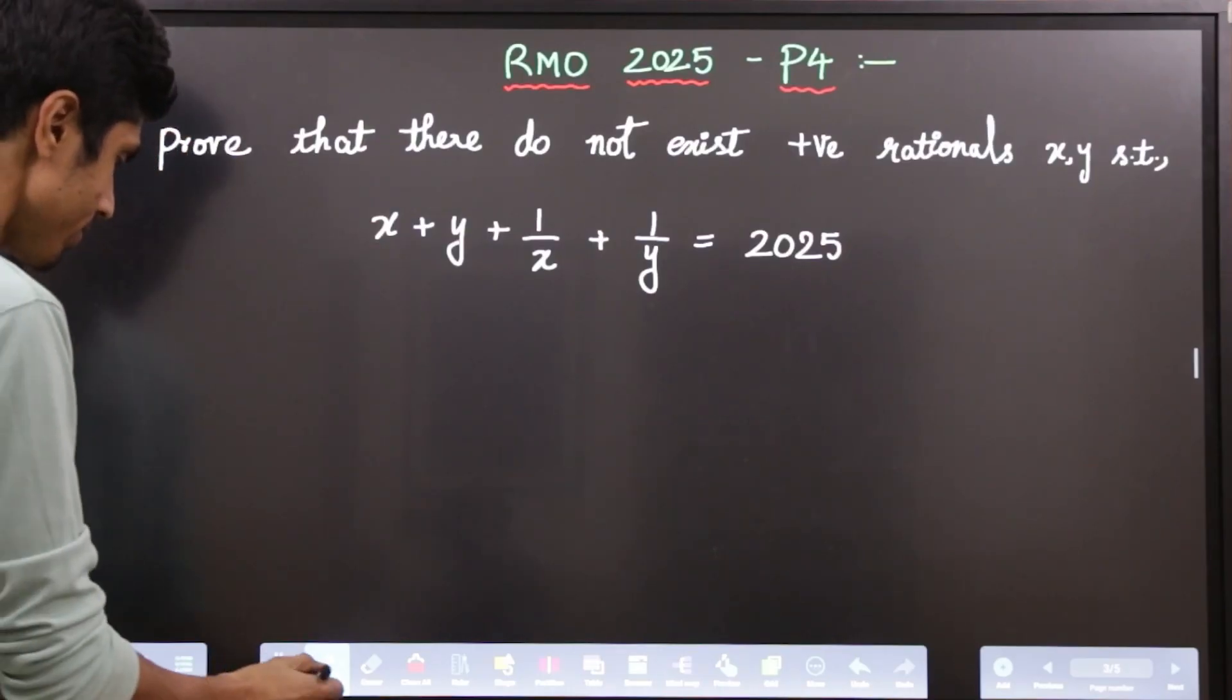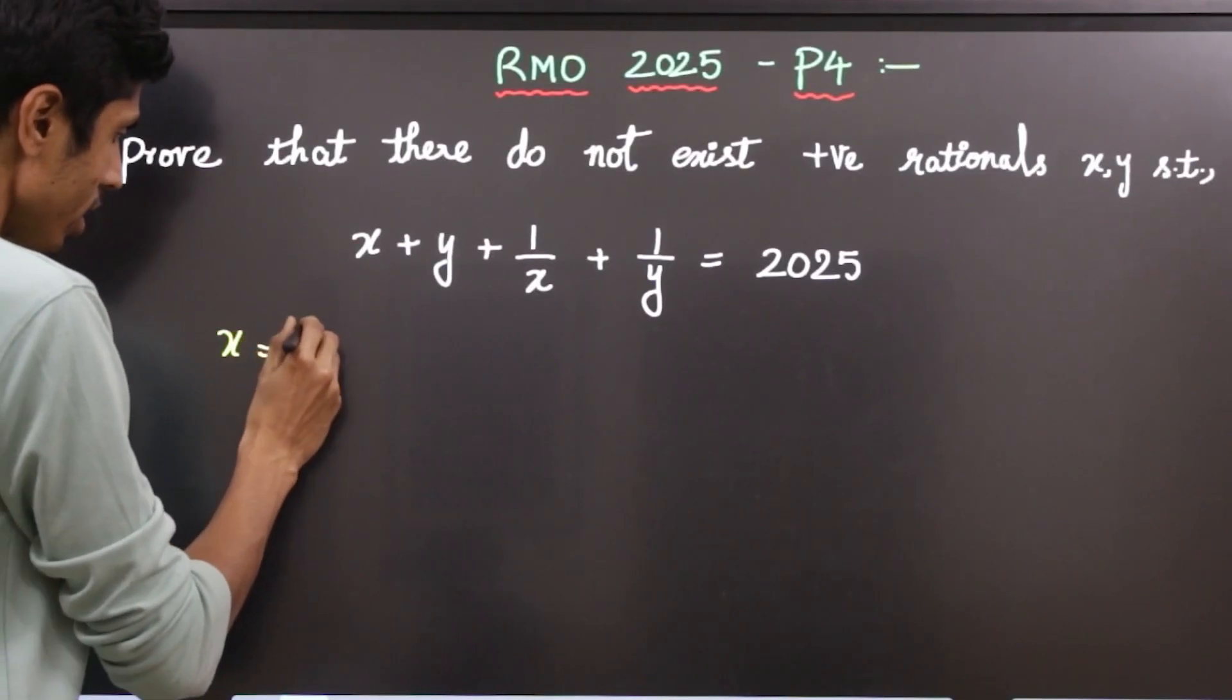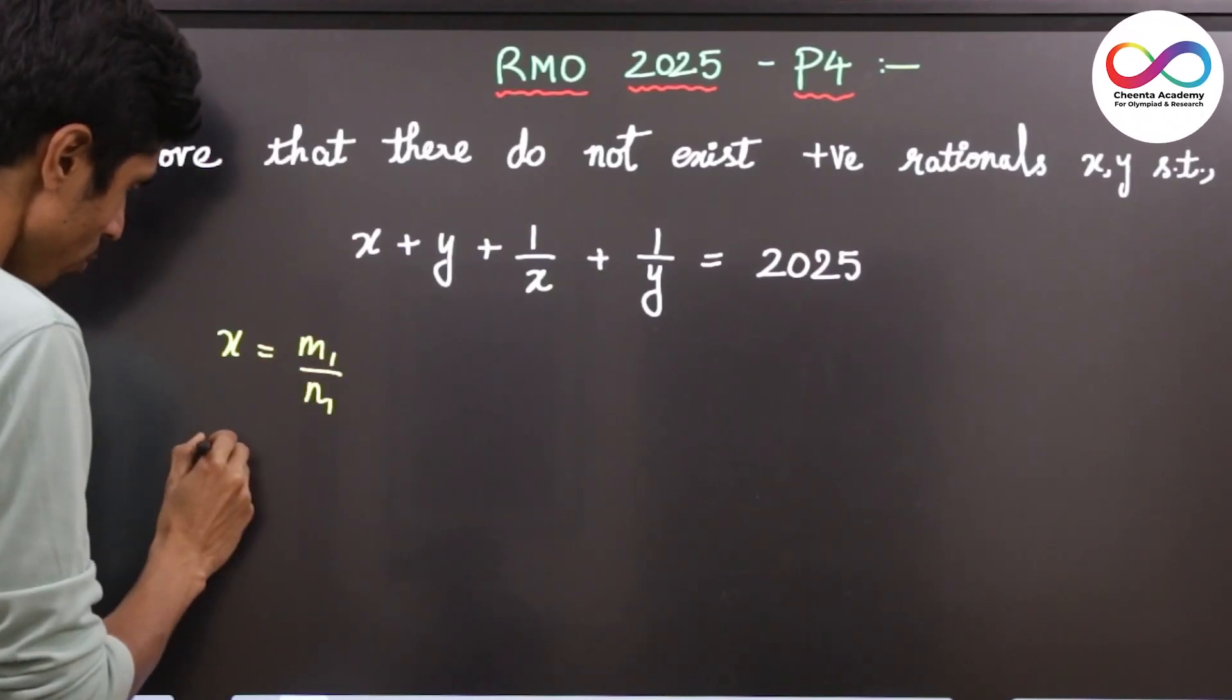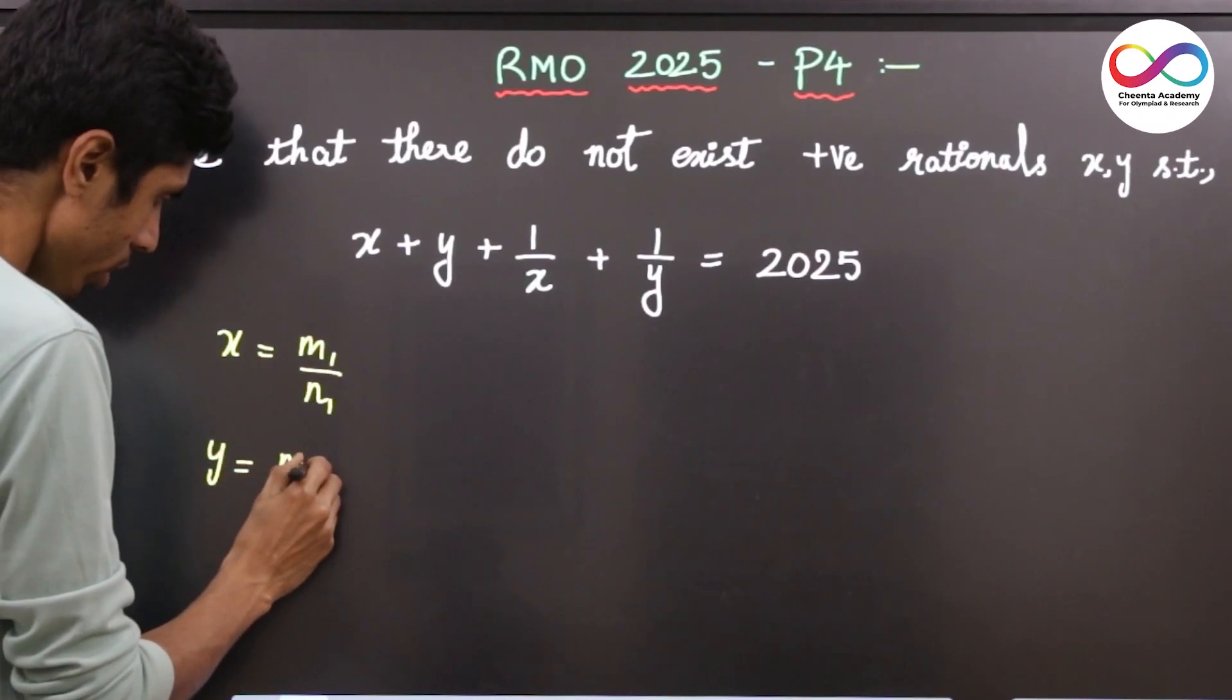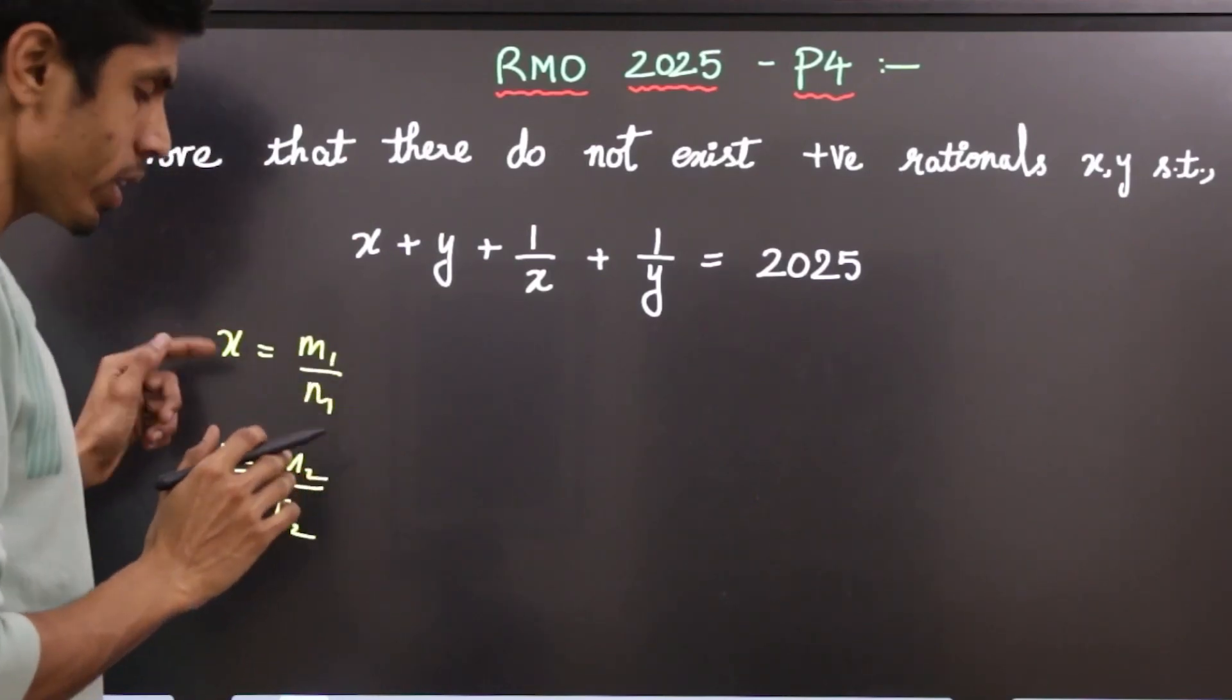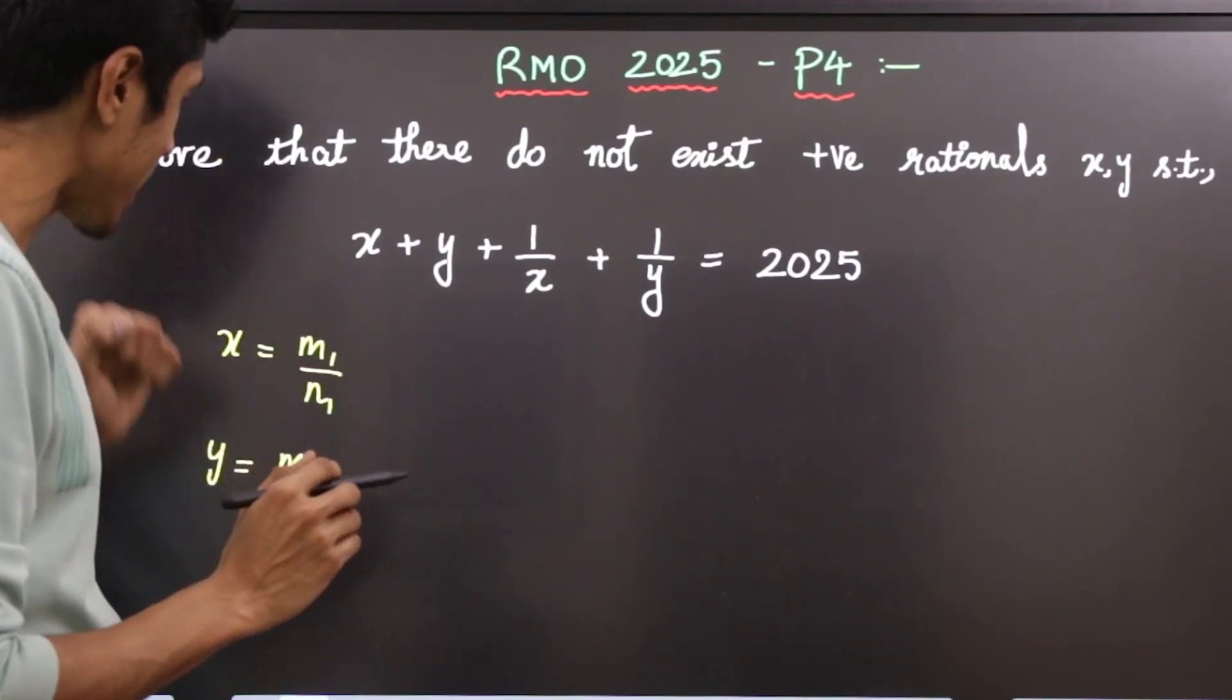Let's take x to be m1 upon n1 and y to be m2 upon n2. They are positive, so m1, n1, m2, n2, all these are natural numbers.